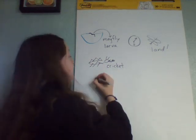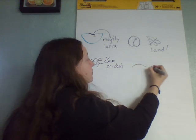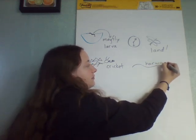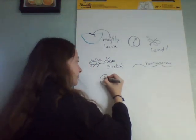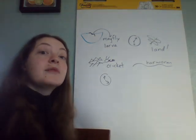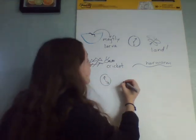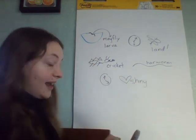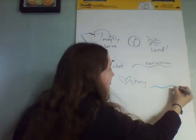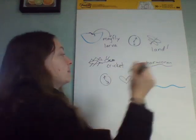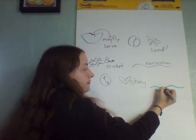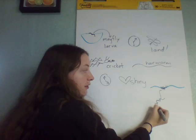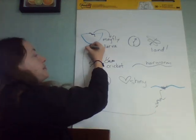Then the larva ends up inside the cricket, and it grows into a big, long, skinny hair worm that is all coiled up inside that cricket. Time passes. When it's ready to reproduce, the hair worm takes over the cricket's brain — it releases chemicals that make the cricket love shiny things. Unfortunately, a shiny thing is water. The cricket hops into the water because it's lost control of its brain, and the hair worm squiggles back out, reproduces with another hair worm, and we start back to hair worm larva again.